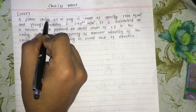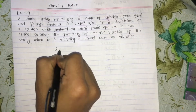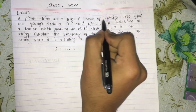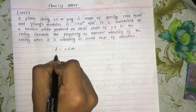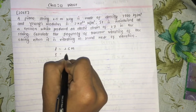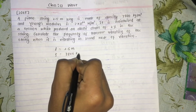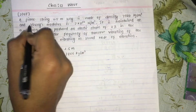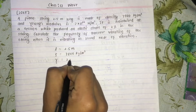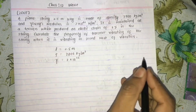A piano string of length equal to 1.5 meters is made of material with density rho equal to 7800 kg per meter cube, and Young's modulus equal to 2 times 10 to the power 11.